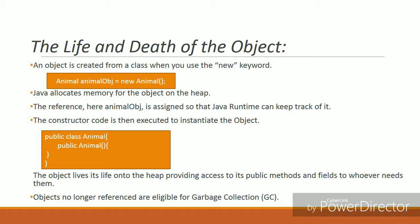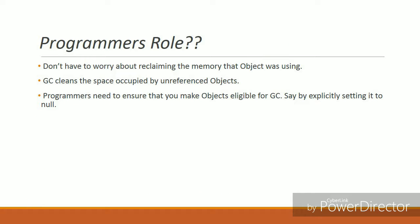Objects on the heap are continually monitored to check if they are referenced. Objects no longer referenced get eligible for garbage collection. The garbage collector is invoked by the JVM to claim unused objects that are no longer referenced. The programmers needn't worry about reclaiming the unused space. JVM invokes the garbage collector when your application is running out of space, to destroy some or all of the unused objects.